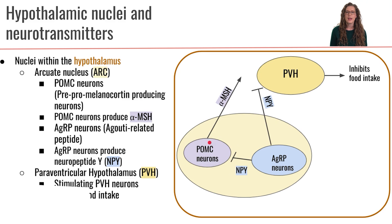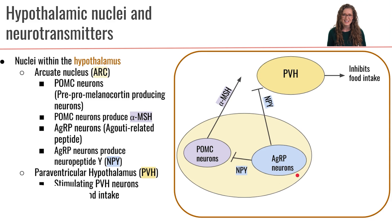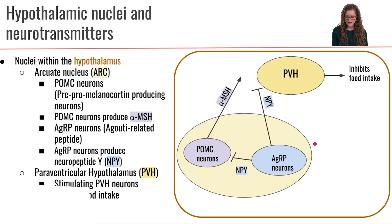These POMC neurons are neurons that are going to secrete the neurotransmitter alpha-MSH. That's cluster one — the POMC neurons — and they secrete alpha-MSH. The second cluster of neurons within the arcuate nucleus are called the AGRP neurons. AGRP stands for agouti-related peptide. These AGRP neurons will produce a different neurotransmitter called neuropeptide Y, abbreviated as NPY.